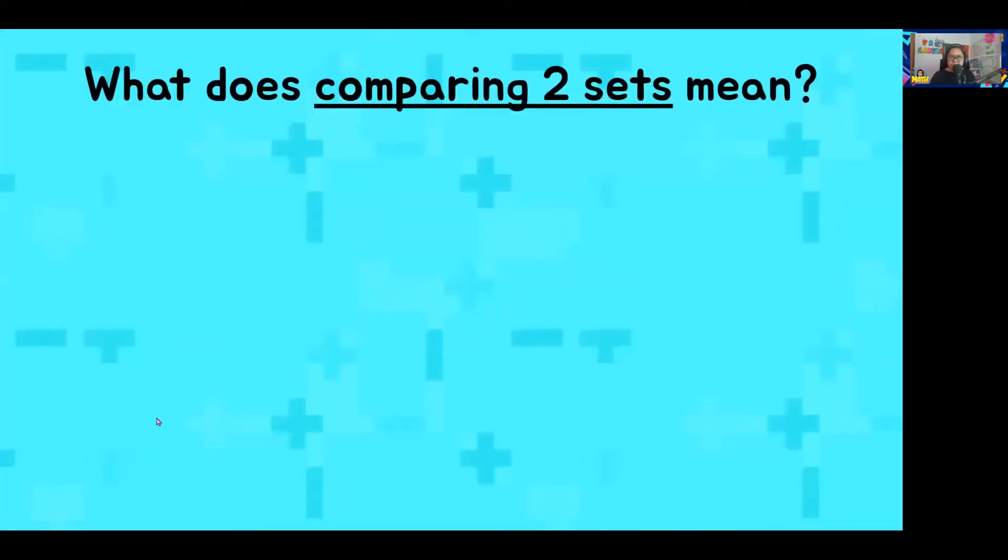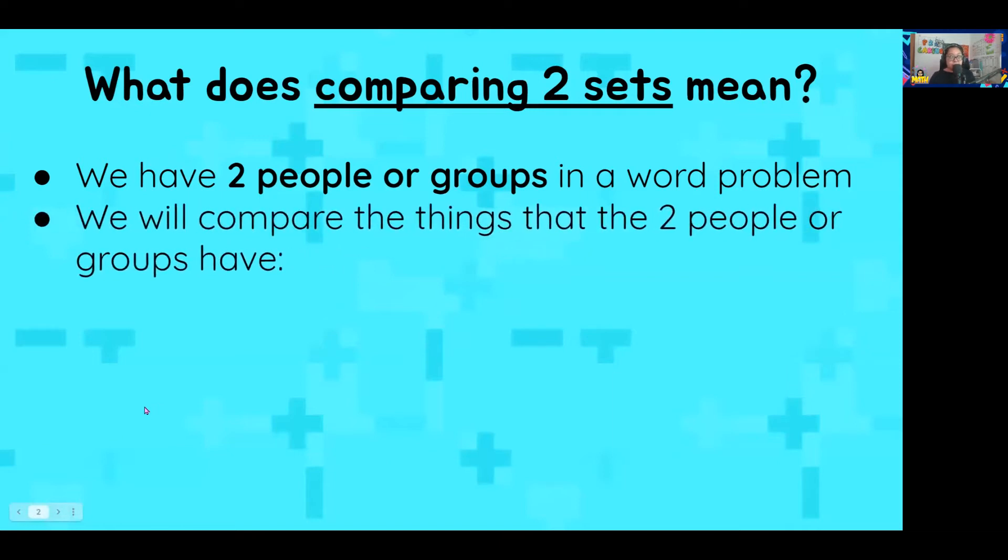What does comparing two sets mean? When we compare two sets, that means in a word problem, we will have two people or two groups. We will compare the things that those two people or groups have. And we will find words like fewer than or more than. Those are important clues.